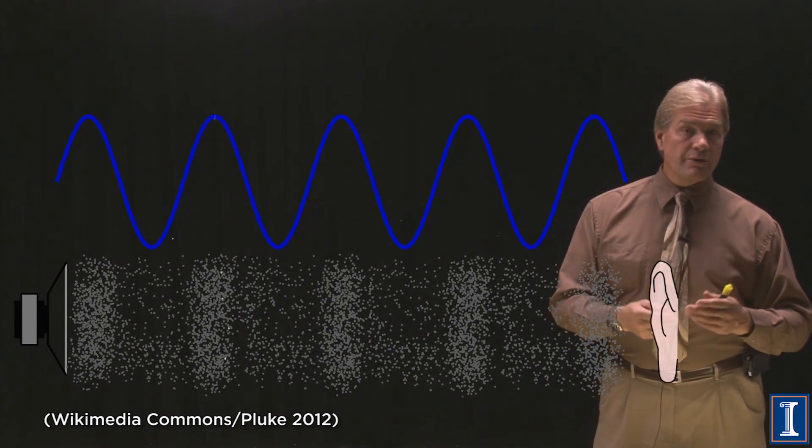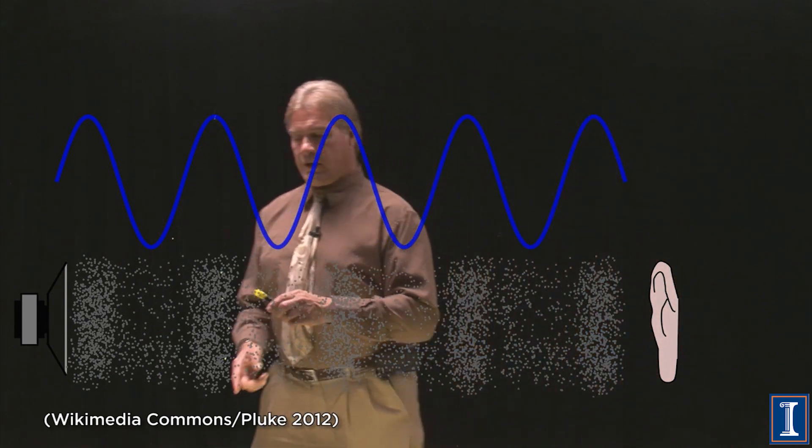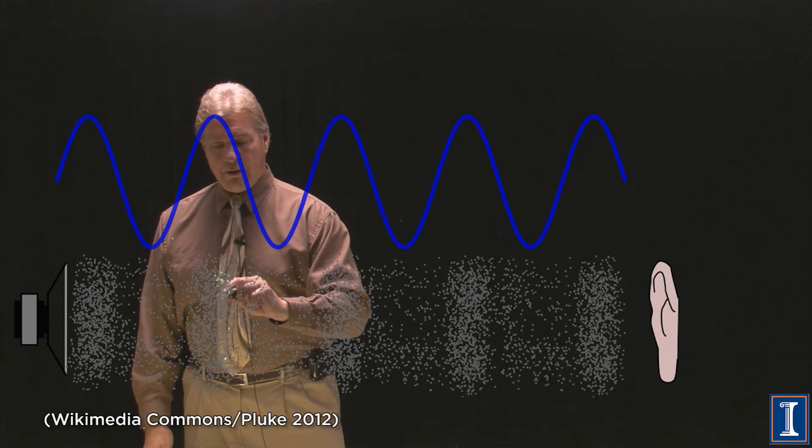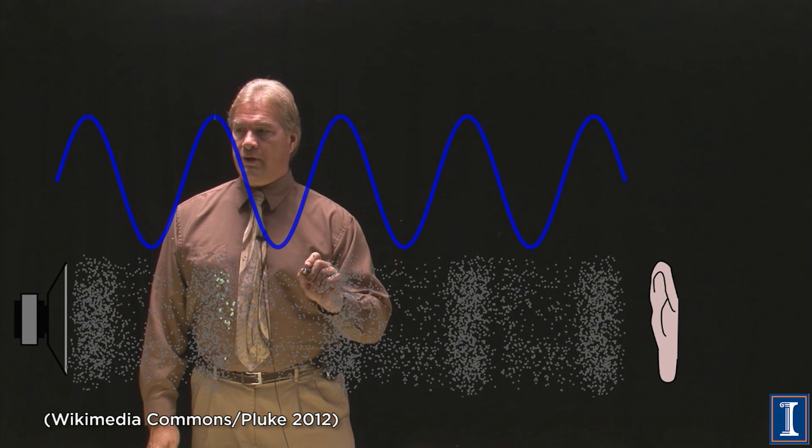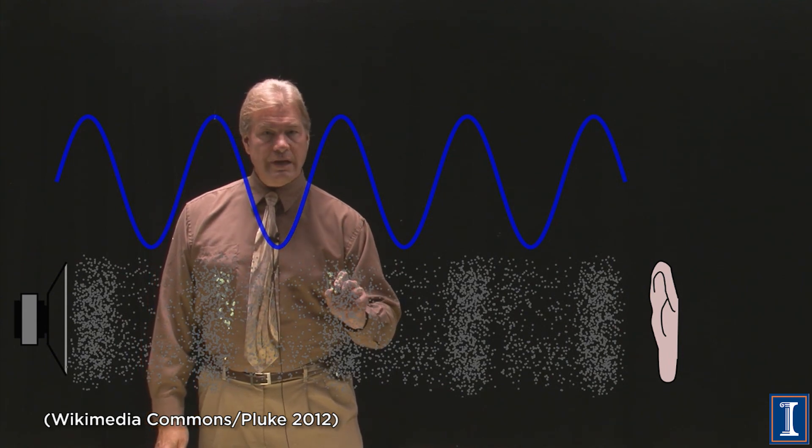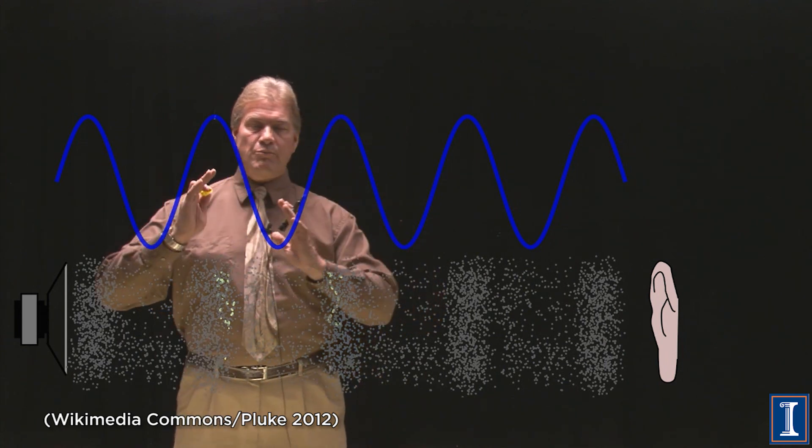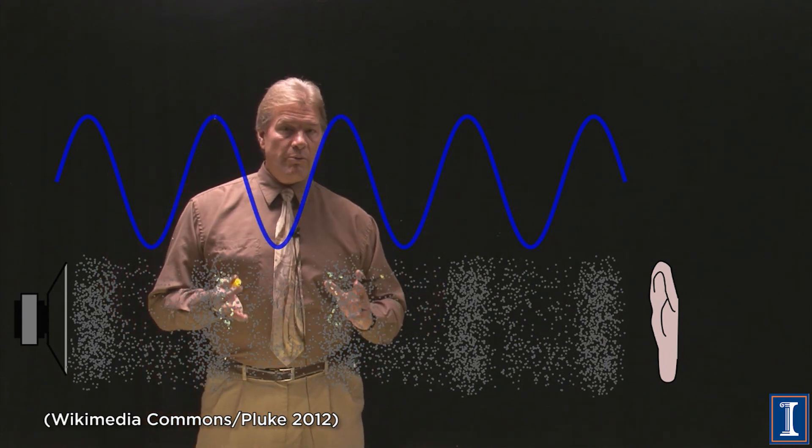So if we look at this, what you have here is a denser zone of the air, and then in between it's less dense, and then over here again you have a denser spot. These are the waves of the air, the compression waves that travel along.